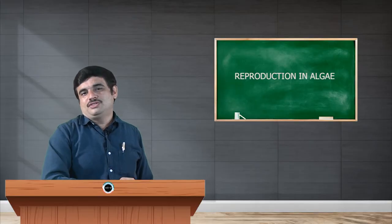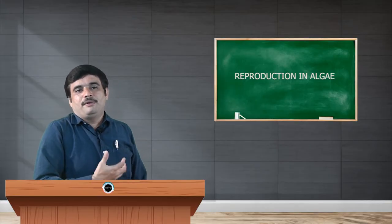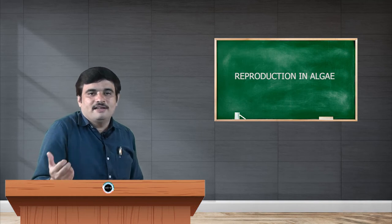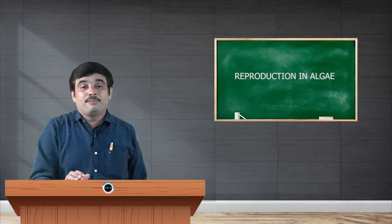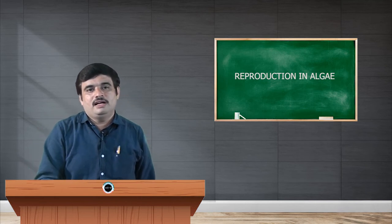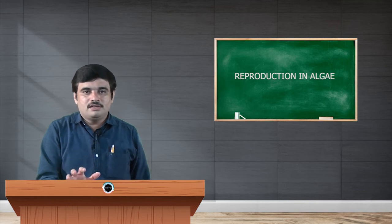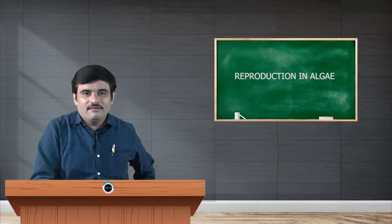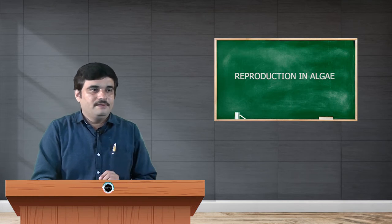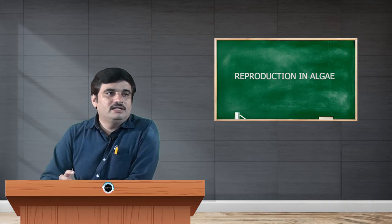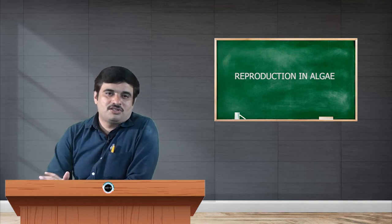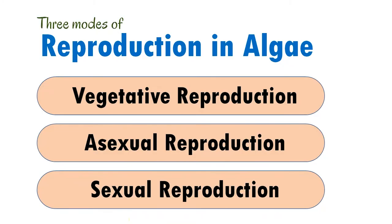Evolution has taken place because over a period of time, different types of internal and external factors have influenced the reproductive nature of that particular organism or group of organisms — in our case, the algae. We will now start our discussion with respect to the three important modes of reproduction in algae, namely vegetative reproduction, asexual reproduction, and sexual reproduction.